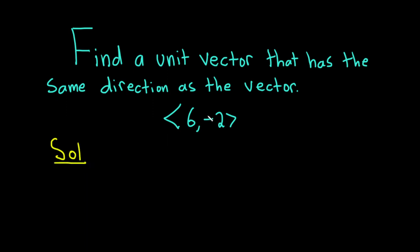To find a unit vector that has the same direction as this vector, all we have to do is take this vector and divide it by its own magnitude.